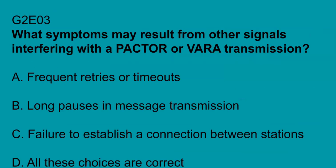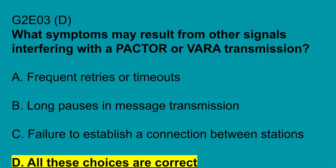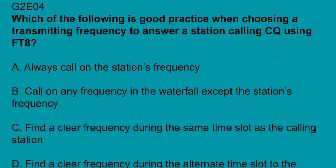G2E03: what symptoms may result from other signals interfering with a PACTOR or VARA transmission? All of the choices are correct: frequent retries or timeouts, long pauses in message transmission, and failure to establish a connection between stations. The answer to look for is all of these choices are correct.